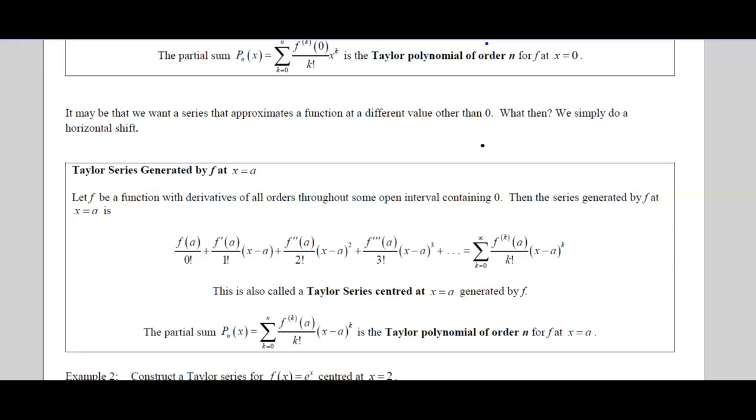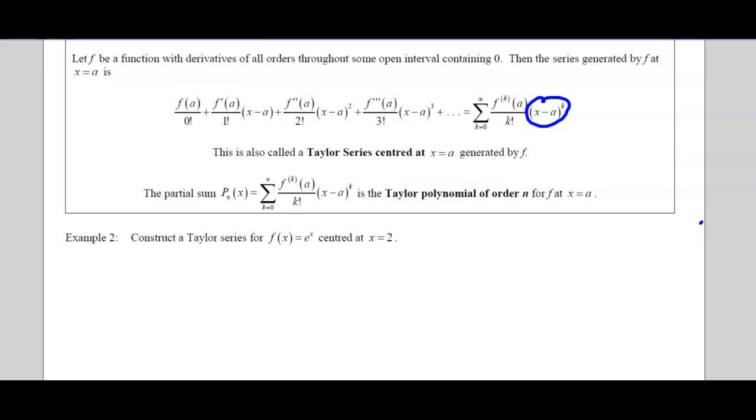So if we look down here, sometimes we might want a series that approximates a function at a different value other than 0. So what then? Well, you remember back to Math 30-1 where you did transformations. Sometimes it's easier than others. We're going to keep it pretty straightforward. So if you're asked to approximate at x equals 2, then you're going to do that transformation. Remember, back to Math 30-2, you replaced x with x minus 2, if you wanted to move it to the right 2 units. And so that's essentially what you're doing. You can see that x minus a, so that's moving it to the right the value of a.